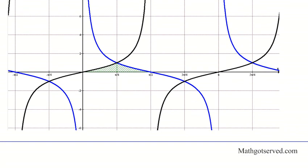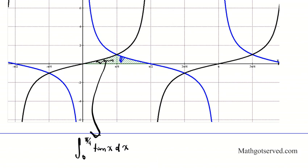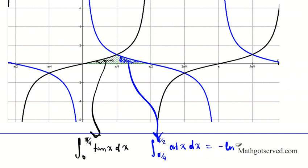Using symbols: the left area under the tangent curve is the integral from 0 to pi over 4 of tan x dx. The area under the blue cotangent curve is the integral from pi over 4 to pi over 2 of cotangent x dx. These two areas add up to the answer we found: negative the natural logarithm of 1/2. That entire combined area is what the question is asking for, and its value is negative the natural logarithm of 1/2.